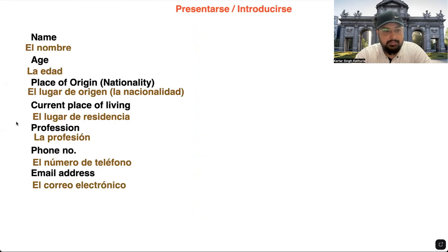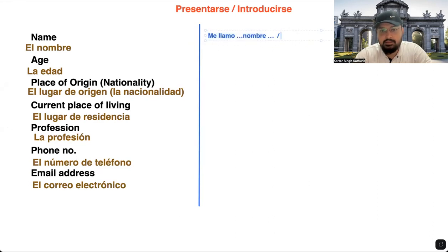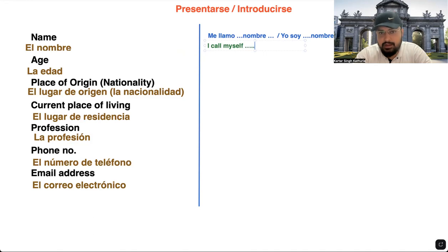How do we tell our name? There are three different ways. You can say 'me llamo' and then your name — meaning 'I call myself.' Or you can say 'yo soy' and the name — meaning 'I am.' And the most basic one: 'mi nombre es' and the name — meaning 'my name is.' So these are the different ways to tell your name.